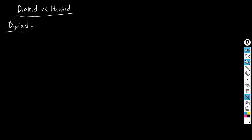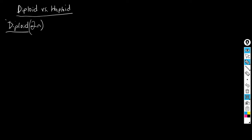We're going to write down some very simple, non-textbook-like definitions. If you see something that's diploid, think of that 'di' as 2. You'll see something diploid represented as 2n. What that means is that we're talking about a cell that has a complete set of chromosomes. We don't fully understand this yet, but I'll give you an example.